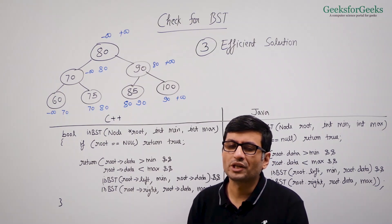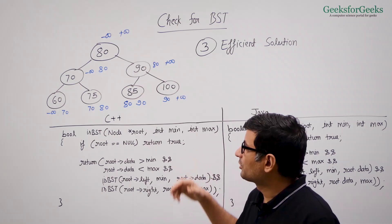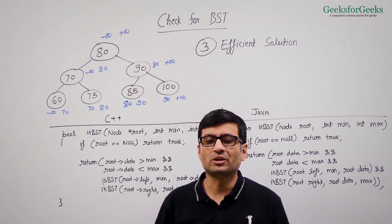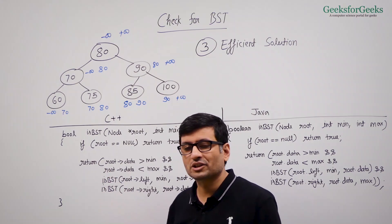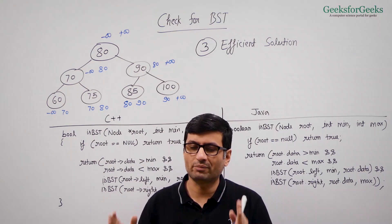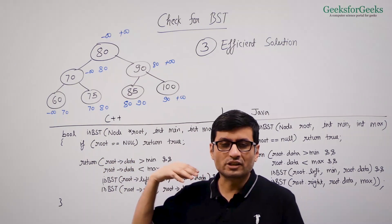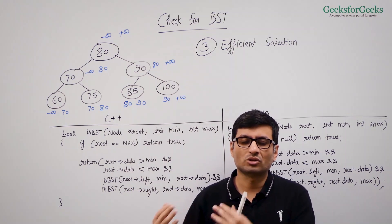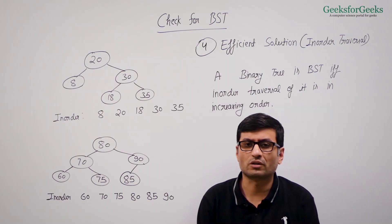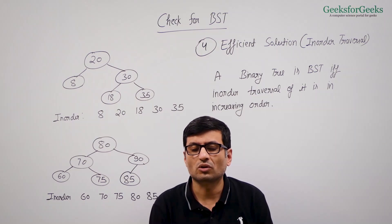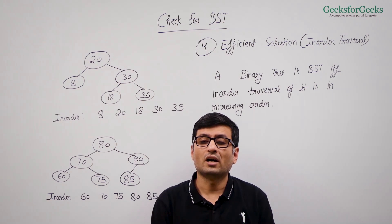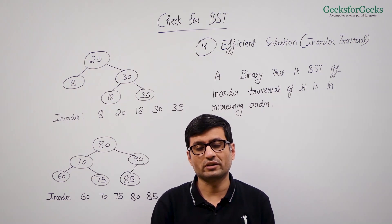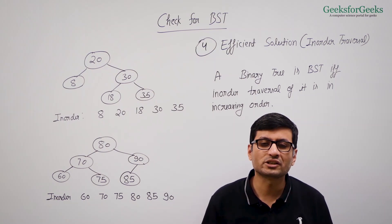If someone asks you to write an isBST function that takes only one parameter (root), you can write the min-max version as an internal helper function and wrap it. You call that helper inside the given function with initial values of minus infinity and plus infinity. Now let's talk about a fourth solution for the is-BST problem. This solution is also O(n) and is based on the fact that a binary tree is a binary search tree if and only if its inorder traversal is sorted.